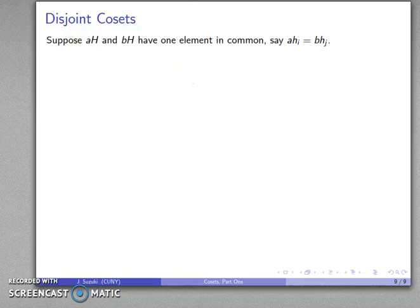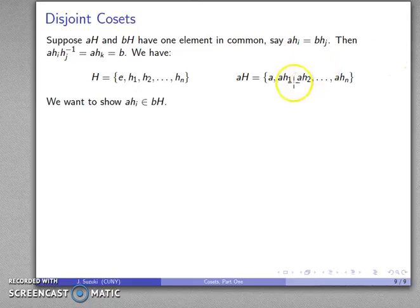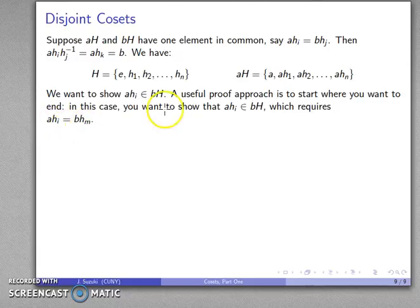So a quick summary of where we are: if two cosets have one element in common, then B is going to be in AH. Now what I want to do is show that everything in AH is also in BH. I know what H looks like, I know what AH looks like, and I want to show that everything in AH is some element of BH. A useful approach is to start where you want to end. We want to show that AH_i is in BH, meaning AH_i equals B times some H_m in H.